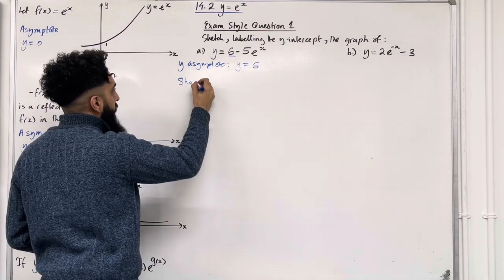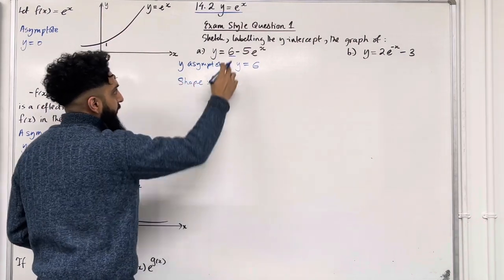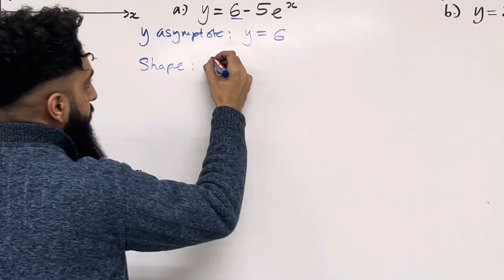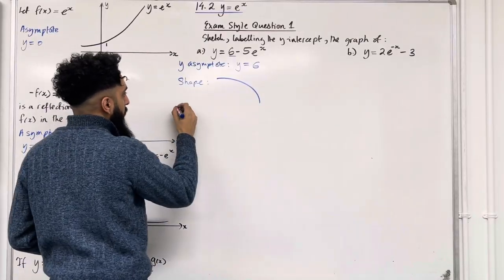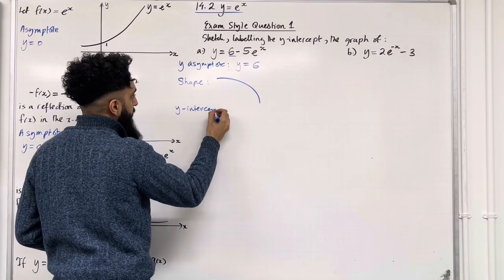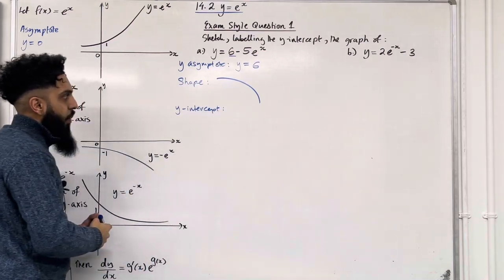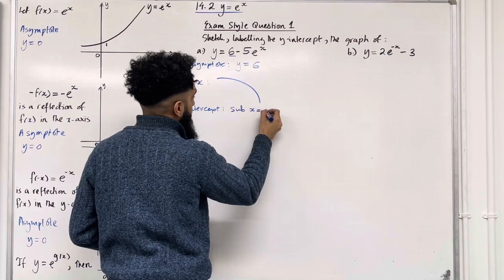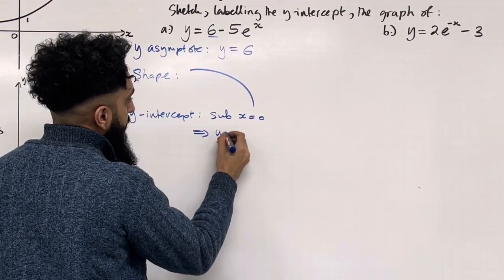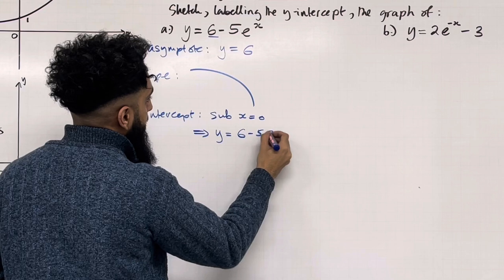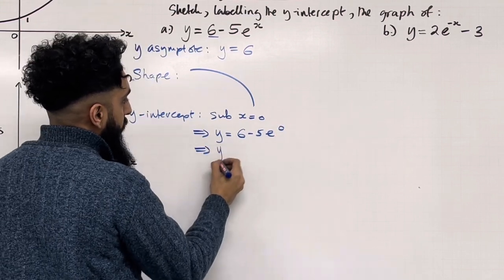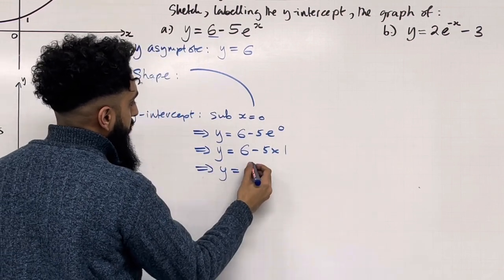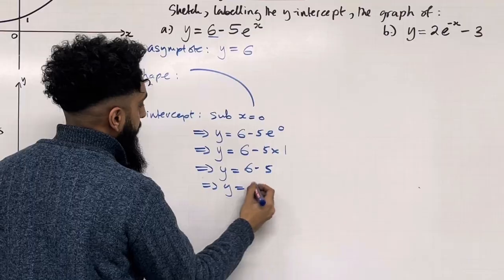Now we're going to determine the shape of the graph. We have a negative e to the power x, and negative e to the power x takes on this shape. Now we're going to work out the y-intercept by substituting x equal 0. This implies y is equal 6 minus 5 e to the power 0, which implies y is equal 6 minus 5 multiplied by 1. Hence y is equal 6 minus 5, therefore y is equal 1.